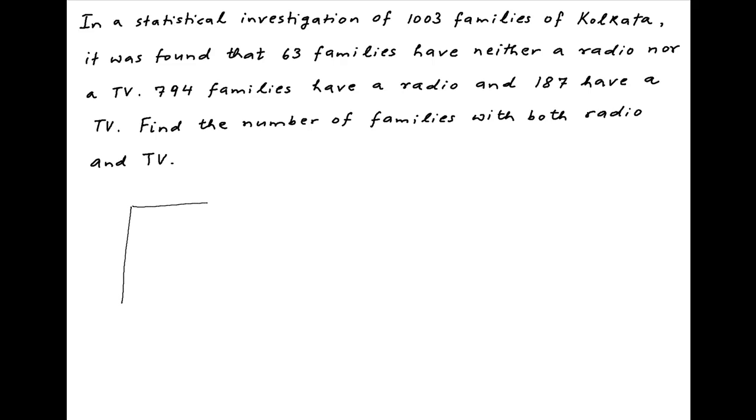We start by representing the given information in the form of a Venn diagram. Total sample size is equal to 1003 families. Some families have a radio, which is shown by the circle here. Some families own a TV, shown by the second circle.